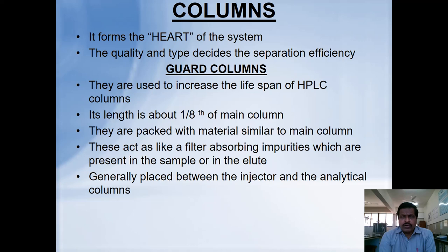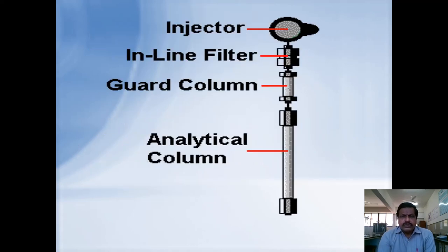The guard columns used match whichever column is being used for separation. For example, if you are using a reverse-phase C18 column, then a reverse-phase C18 guard column is also available. The guard column is approximately one-eighth the size of the main column and is packed with a material similar to the main column. It acts as a filter, absorbing impurities present in the sample. The guard column is placed between the injector and the analytical column.